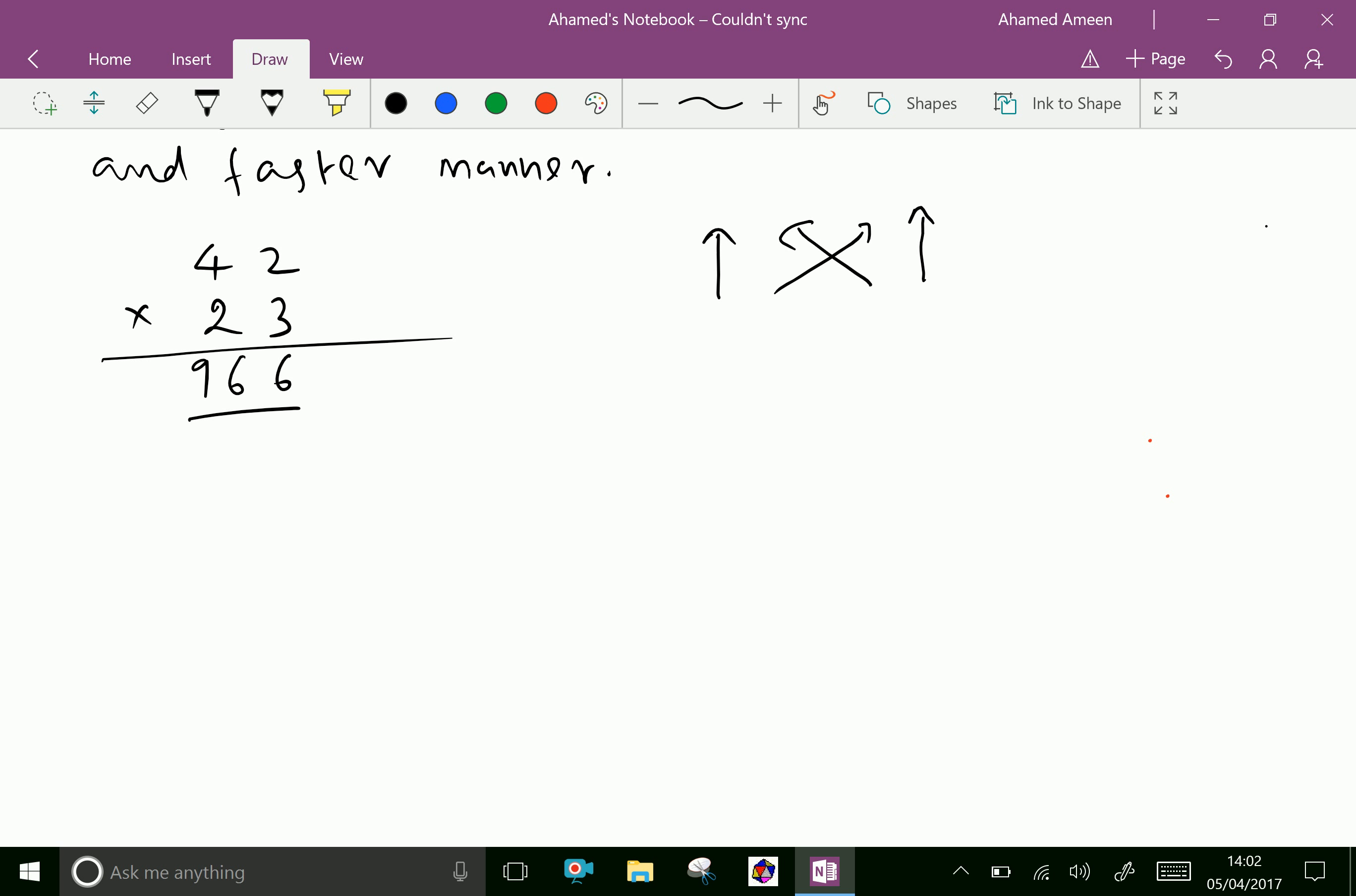Look at this number: 85 times 73. First multiply these arrows. 3 times 5 is 15, put 5, 1 carries. 3 times 8 is 24, 24 plus 1 is 25, and 7 times 5 is 35. 25 plus 35 is 60.